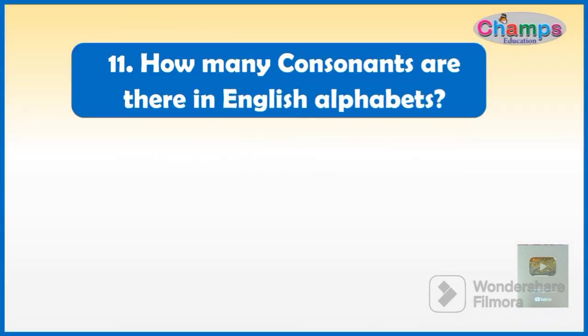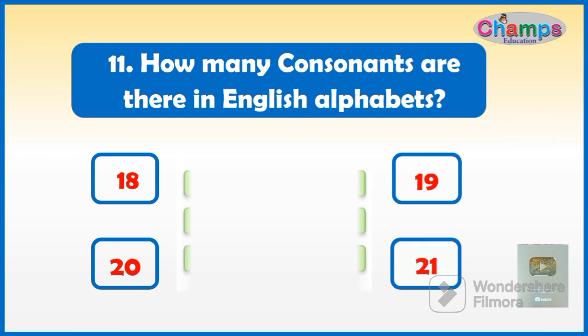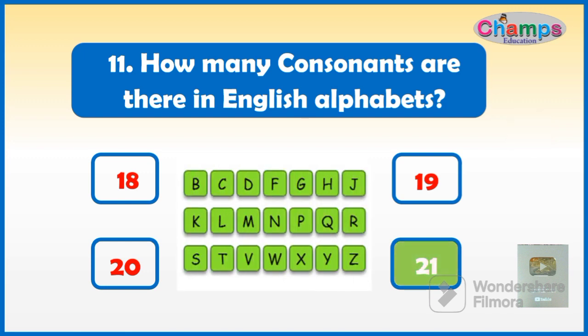How many consonants are there in the English alphabet? Options: 18, 19, 20, or 21. And your time starts now. The correct answer is 21.